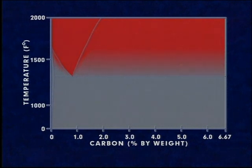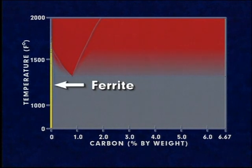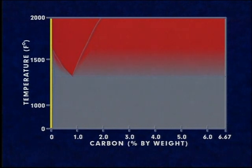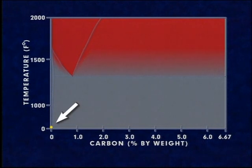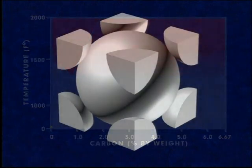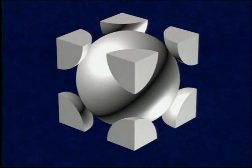The left-hand side of this diagram is ferrite. Ferrite is iron containing an extremely minute amount of carbon. At room temperature, ferrite is magnetic, relatively soft, and has a body-centered cubic crystal structure.